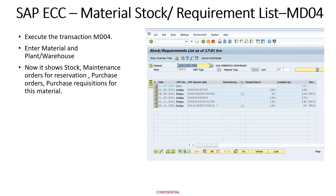Then this screen will appear. For example, here we have taken an example of a material to check its list of requirements or its reservations. This material is showing that a planned maintenance order is created for this item having quantity 346. A purchase order having quantity 50 is also created for this specific material.